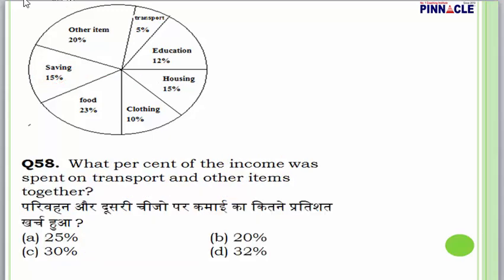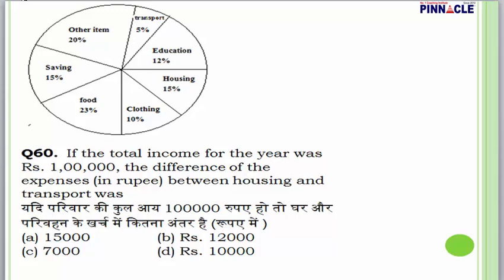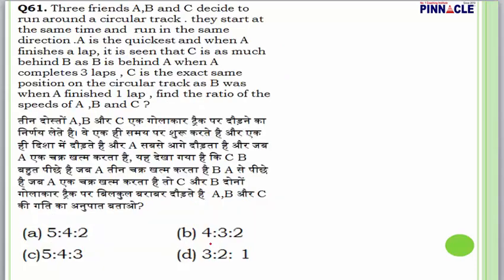Question 58: Transport is 5% and other items are 20%, so together they are 25% of income. Answer is A. Question 59: Total income is Rs. 1 lakh; children's education is 12%, so Rs. 12,000. Answer is B. Question 60: Housing minus transport is 10% of Rs. 1 lakh = Rs. 10,000. Answer is D.